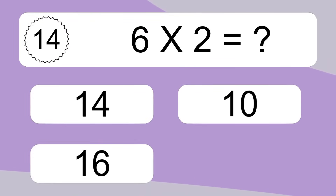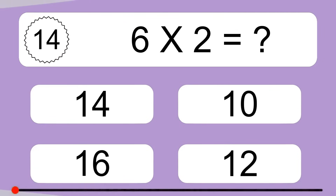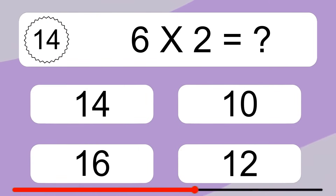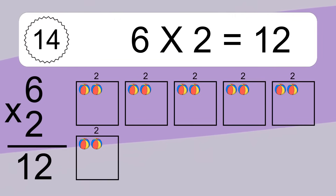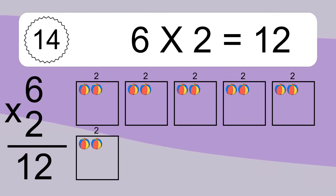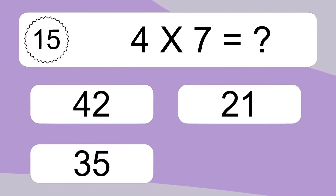6 times 2 equals what? 6 times 2 equals 12. We have 6 boxes and each box has 2 colorful balls inside. If you count all the balls in all the boxes together, you will have 6 times 2 balls. This equals 12 balls.